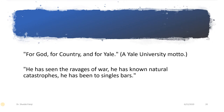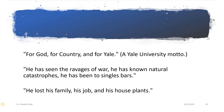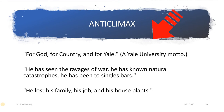Just the opposite of climax, we look at: 'for God, for country, and for ale.' See the succession of the words. 'He has seen the ravages of war. He has known natural catastrophes. He has been to singles bars.' And then: 'He lost his family, his job, and his house plants.' Can you see the succession? This is just the opposite of climax — moving in a downward, descending order. Therefore the word is also very self-explanatory: anti-climax, just the opposite of it.